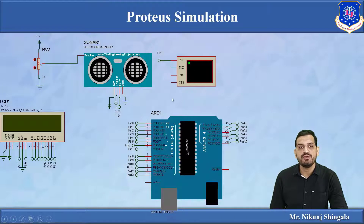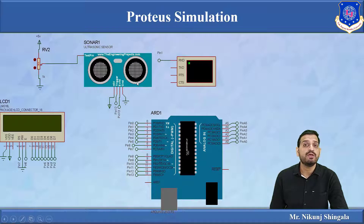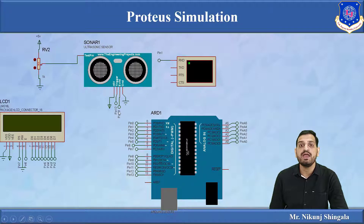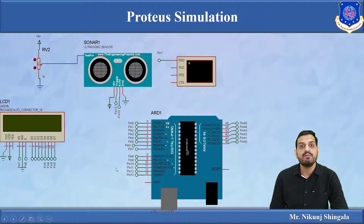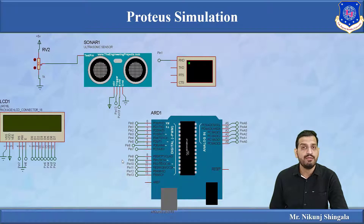In Proteus simulation, the ultrasonic sensor requires a library — if you don't have it, you need to find and paste it in the library folder of Lab Center. The sensor has 4 pins: VCC connected to +5V, trigger pin connected to pin 12, and echo pin connected to pin 13. Terminals are named so wires don't need to be extended physically — pin 12 terminal on the sensor connects internally to pin 12 on the Arduino. The last pin is ground. Using named terminals avoids long wires that slow simulation.